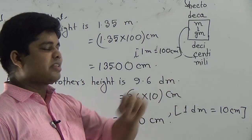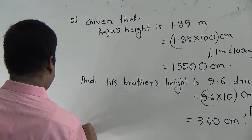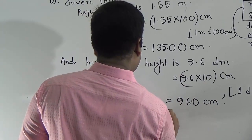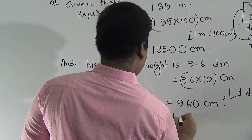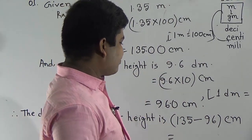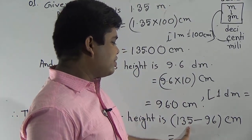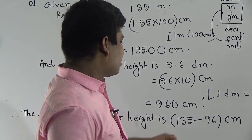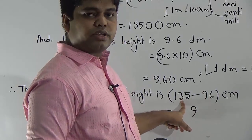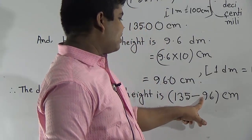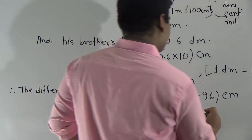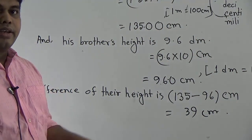Now we find out the difference in their heights. Therefore, the difference in their height is 135 − 96 centimeters. We subtract: 5 is less than 6, so we borrow to get 15 − 6 = 9. Then 10 to 13 gives 3, and carrying gives 1. So 135 − 96 = 39 centimeters. This is the required difference of their height and it is the answer.